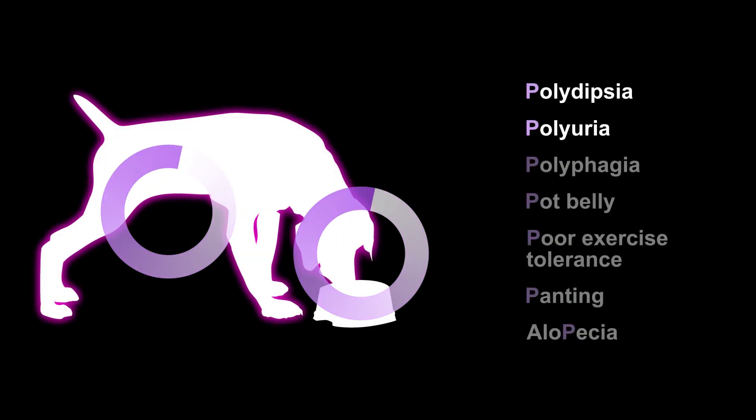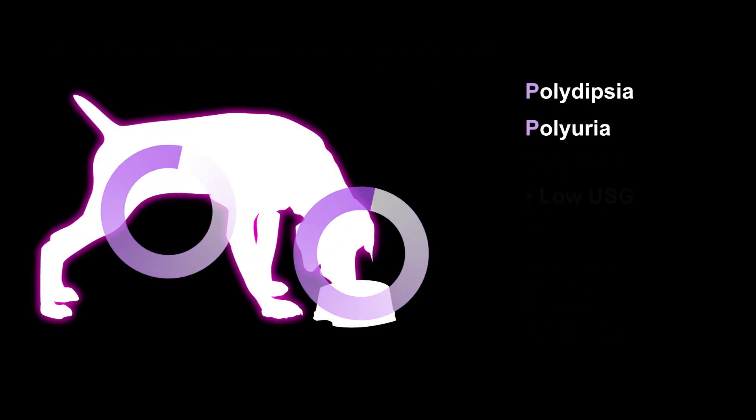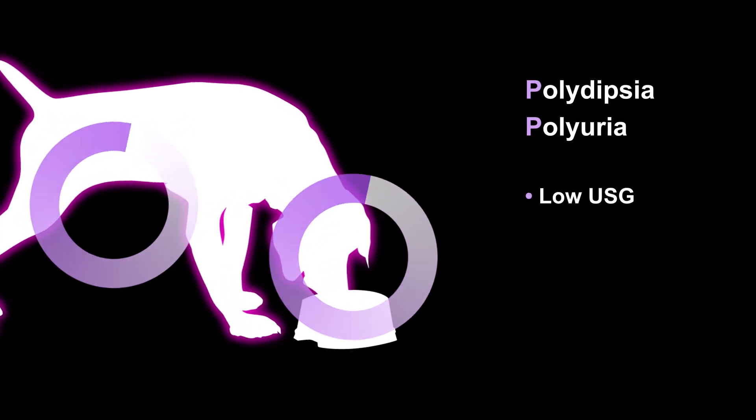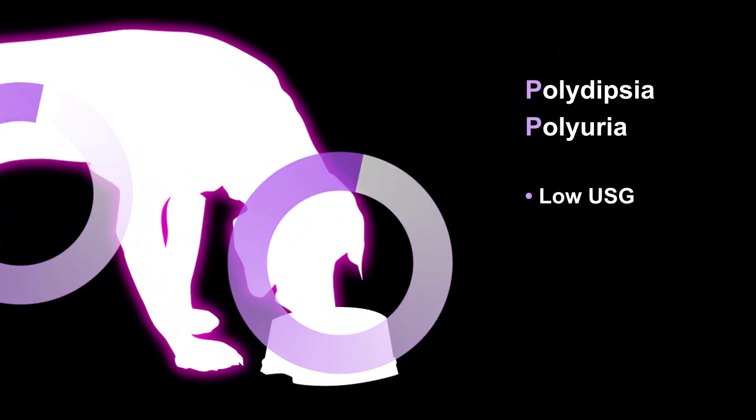Up to 90% of dogs with Cushing's disease display polydipsia and polyuria. As a result, urine-specific gravity will also be low.